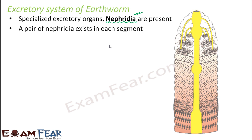You can consider nephridia as analogous to human kidneys — like how we have kidneys for excretion, similarly earthworms have nephridia. A pair of nephridia exists in each segment. It is present in all segments of the body of earthworm except the first three segments and the last segment. In this picture nephridia are not seen in segments one, two, three and the last segment — everywhere else you see nephridia. These dotted structures are nothing but nephridia.